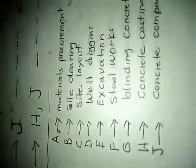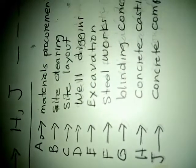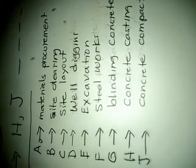The first activity is you procure the material. C is site layout. D you dig the well. E you excavate for the floor. F you do the steel work. G is the blinding concrete to level the ground. H you cast the concrete and I you compact the concrete.